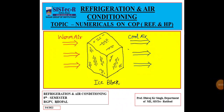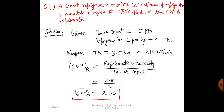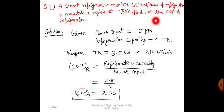Hello students, today we are going to solve some numericals on coefficient of performance on the topic basic concepts of refrigeration and air conditioning. Question number one: a Carnot refrigerator requires 1.5 kilowatt per ton of refrigeration to maintain a region at minus 30 degrees Celsius. Find out the coefficient of performance of the refrigerator.